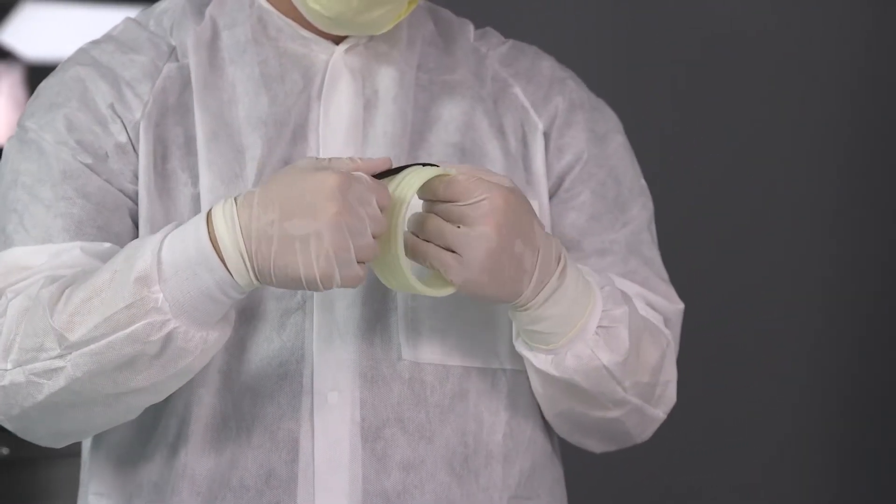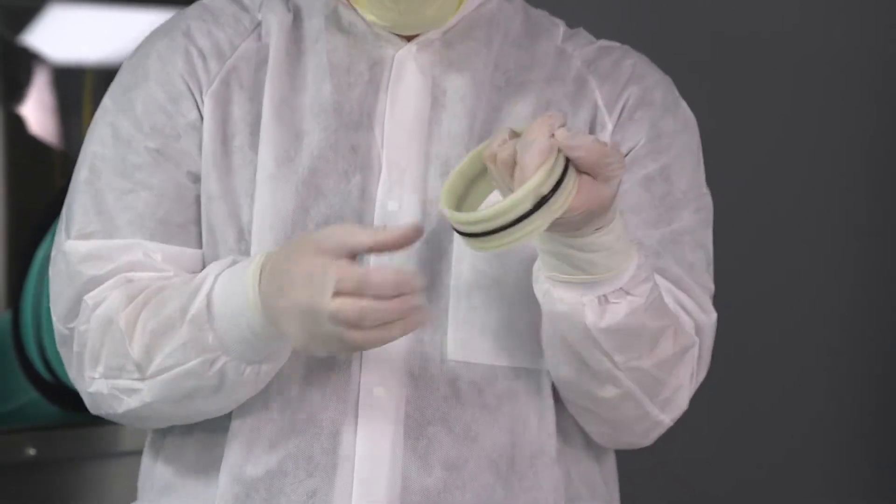Next, you'll assemble the beta ring. Place the larger black beta O-rings into the grooves.